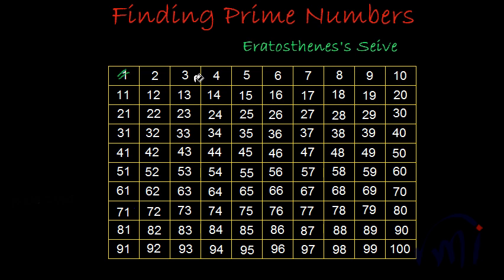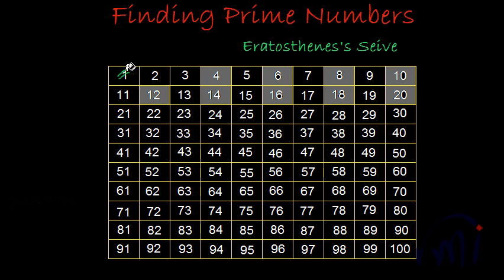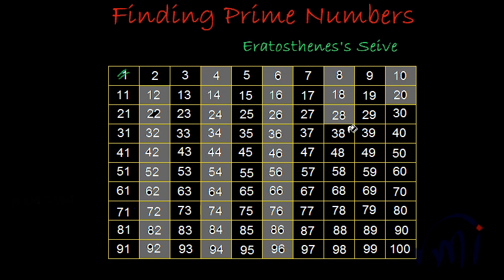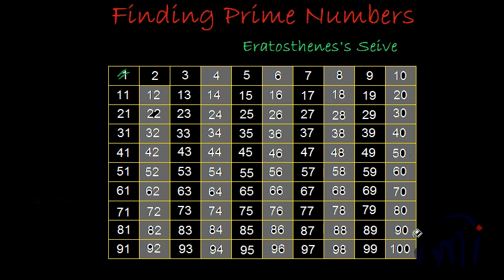Two is a prime number. The second number after two is four, which is a multiple of two. Similarly, six, eight, and all even numbers are multiples of two — twelve, fourteen, and so on. We can shade all the alternate columns because all of them contain even numbers and all will be multiples of two. If they are multiples of any number, they are not prime numbers, so I am shading them in grey.